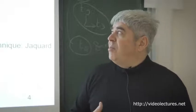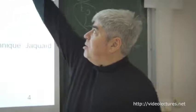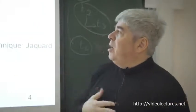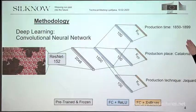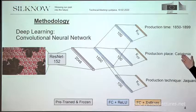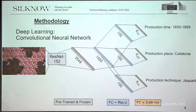And from this vector, well, the machine actually predicts. In this case, it predicts three variables: the production time, the production place and the production technique. And for this specific example, well, this would have been produced in the second half of the 19th century. It was produced in Catalonia. And it was produced using the technique Jacquard.